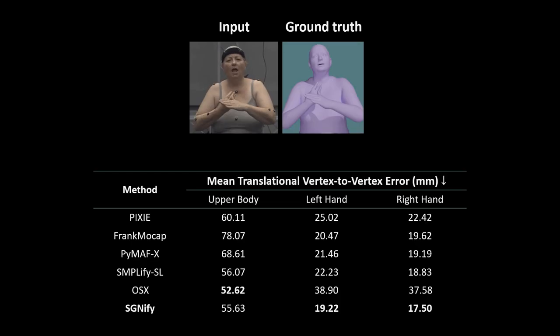We compare Signify with state-of-the-art methods for expressive body pose estimation. We report the mean vertex-to-vertex error in millimeters over the entire upper body and each of the hands. Overall, Signify achieves lower reconstruction errors than state-of-the-art.